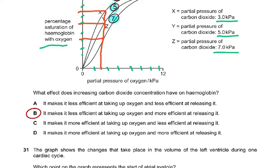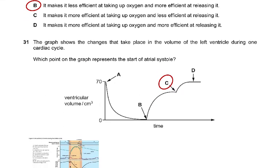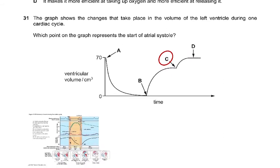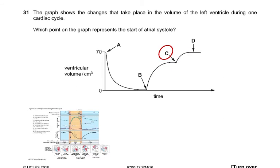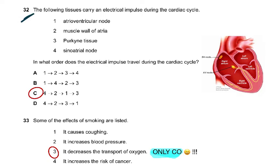Once you read off the values for x, y, and z, you can figure out the correct answer. Question 31: The graph shows changes in the volume of the left ventricle during one cardiac cycle. Which point on the graph represents the start of atrial systole? The ventricular volume is on the y-axis and time on the x-axis. When the volume is at its lowest and then starts to increase again, the answer was C. You need to revise the cardiac cycle graph thoroughly — it is a favourite graph and you can find it on the internet.